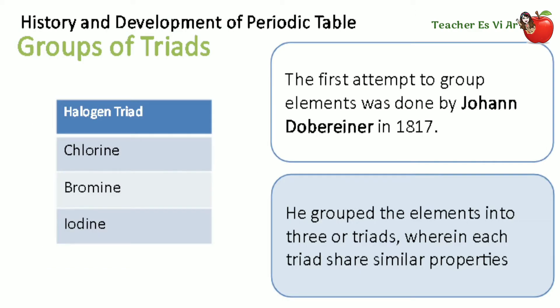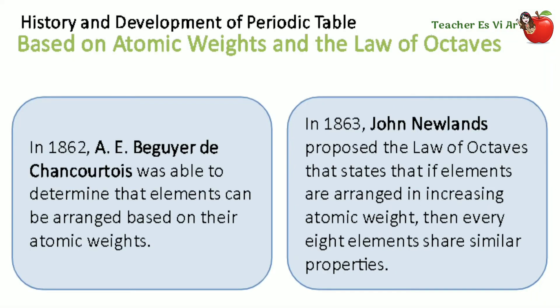The first attempt to group the elements was done by Johan Dobereiner in 1817. He grouped elements into three, or triads. He said that the elements in each triad shared similar properties. For example, the halogen triad is composed of chlorine, bromine, and iodine.